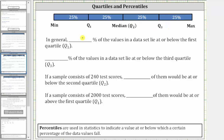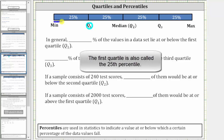Let's use this to complete the following statements. In general, what percent of the values in a data set lie at or below the first quartile? Well, here's quartile one, and we can see 25% of the data values — these data values here — lie at or below quartile one.